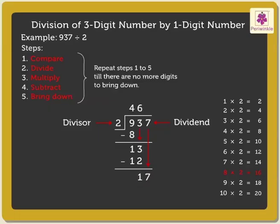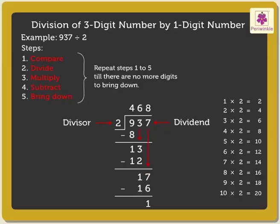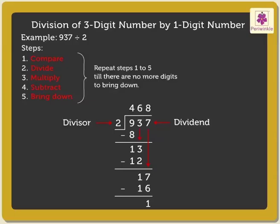So, we write 8 above the 7. As we know, 2 into 8 is equal to 16. Write the number 16 under 17. Subtract 16 from 17, which is equal to 1. Now, as there are no more digits to bring down, we have finished our division. We get the quotient as 468 and the remainder as 1.